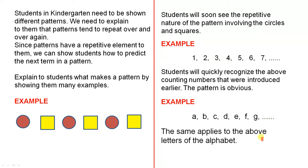Another example. The same applies to the above letters of the alphabet: A, B, C, D, E, F, G. Students in kindergarten would be starting to become familiar with the alphabet, and they'll be able to predict what comes next.